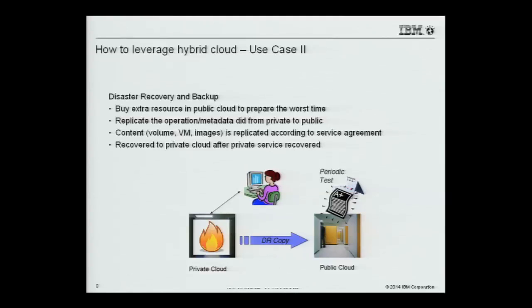After the disaster, you need to periodically replay what you did on the private cloud to make sure the public cloud can catch up with your latest changes. After the disaster or your private cloud has been recovered, you need to replicate back from public to private. This is cheaper than buying a bunch of hardware to build a disaster data center. Since you bought disaster recovery service from the public cloud, that resource is probably not dedicated to you — it's reserved for you in the public cloud vendor's pool.